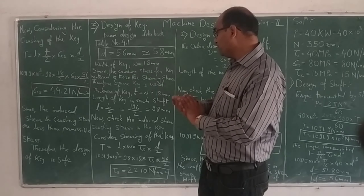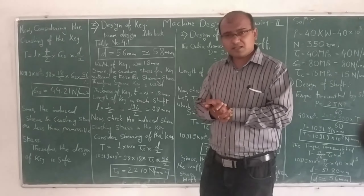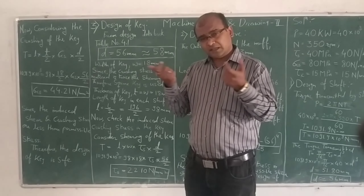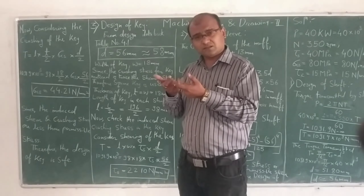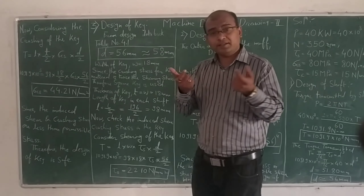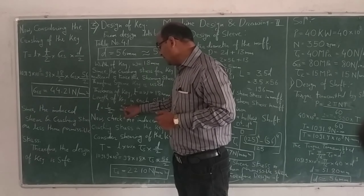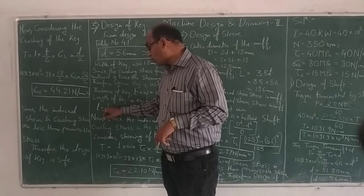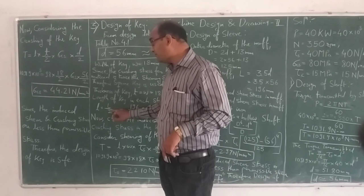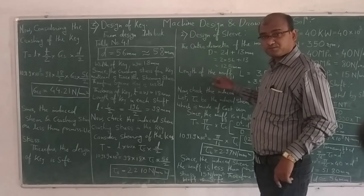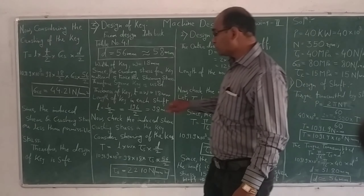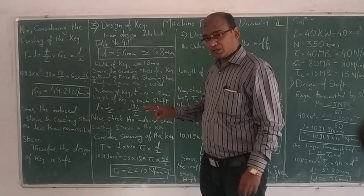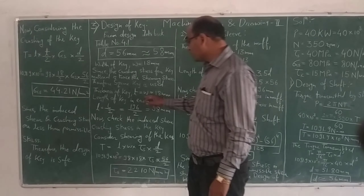Next is the length of the key in each shaft. In a muff coupling, two shafts are joined together. The length of the key in each shaft, small l = L / 2 (half the length of the muff), because the muff covers both shafts equally. So small l = 196 / 2 = 98 mm, and capital L = 196 mm.